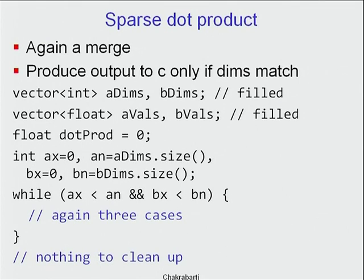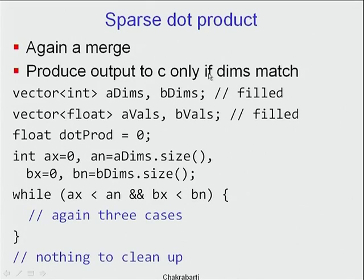The third operation is sparse dot product. This is again a merge, because we need to locate shared dimensions. Only dimensions common to both sparse arrays contribute to the dot product. Unlike the sum, there's nothing to clean up at the end — produce output only if dimensions match. Initialize dot product to 0, Ax and Bx as before. Once one array empties out, no further contribution is possible, so we can quit.